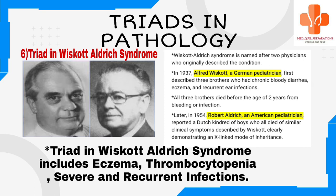Wiskott-Aldrich syndrome is named after two physicians who originally described the condition. In 1937, Alfred Wiskott, a German pediatrician, first described three brothers who had chronic bloody diarrhea, eczema, and recurrent ear infections. All three brothers died before the age of two years from bleeding or infection. Later, in 1954, Robert Aldrich, an American pediatrician, reported a Dutch kindred of boys who all died of similar clinical symptoms, clearly demonstrating an X-linked mode of inheritance.